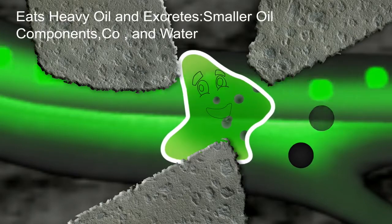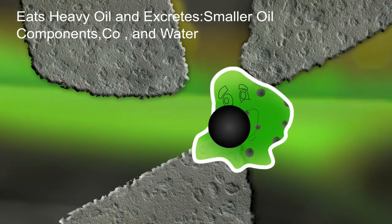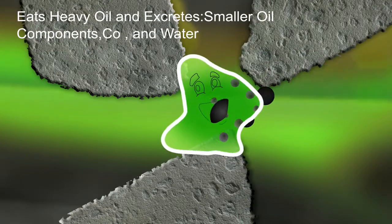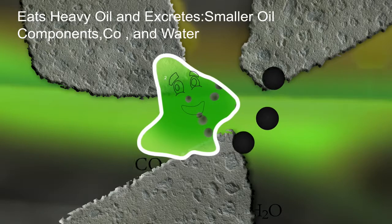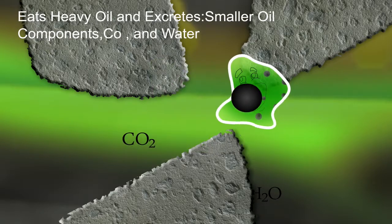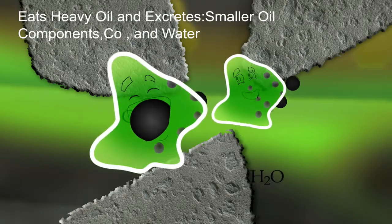And as the heavy oil components go by, it will eat those heavy oil components and then it will excrete a smaller oil component along with CO2 and water.